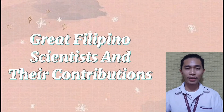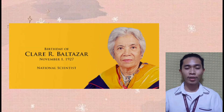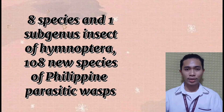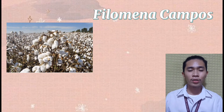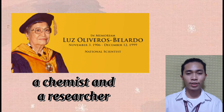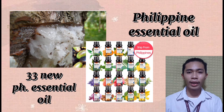Some great Filipino scientists and their contributions: Clara R. Baltazar is the author of the Philippine book on insects. Her scientific contributions include discovering eight species and one subgenus of insects in Hymenoptera, and discovering 108 new species of Philippine parasitic wasps. Philomena Campos is known for her work on cotton in the Philippines and also for research on sunflowers. Luz Oliveros Bilardo is a chemist and researcher who studied essential oils collected from Philippine plants and orchids, and was able to collect 33 new Philippine essential oils and study their chemical and physical properties.